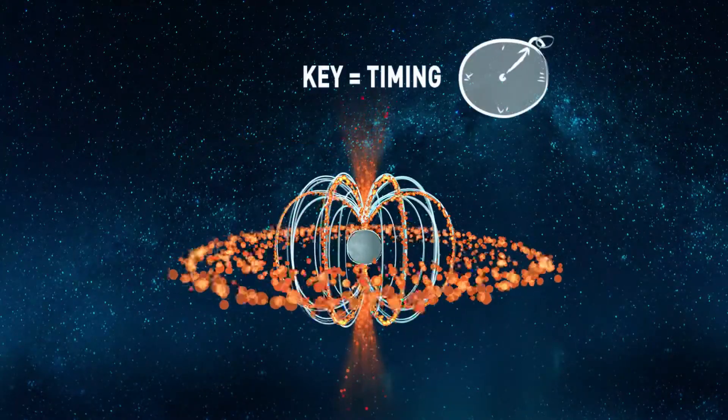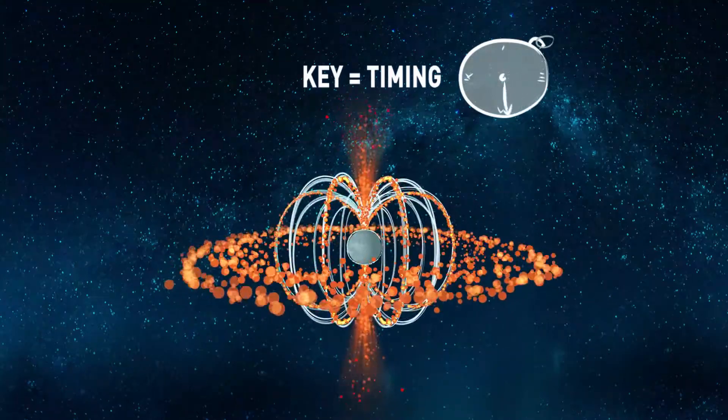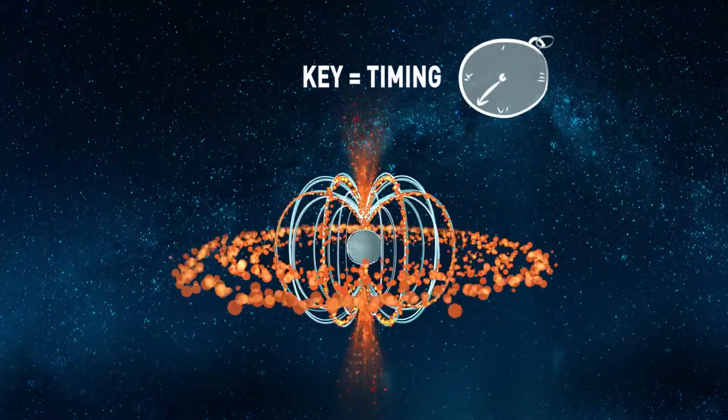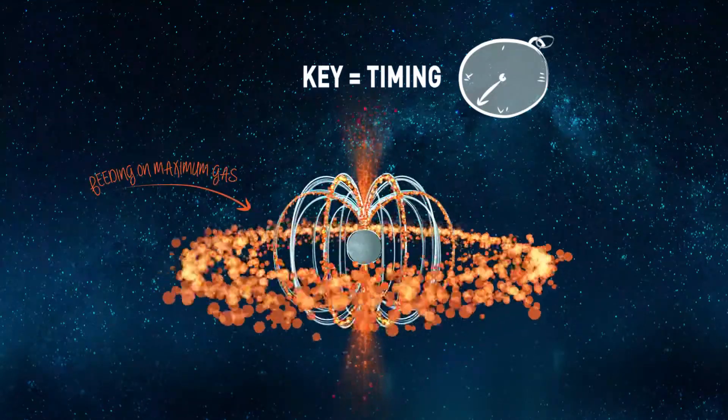Key to finding this jet was being able to observe the system at precisely the right moment, when the neutron star was feeding on as much gas as possible.